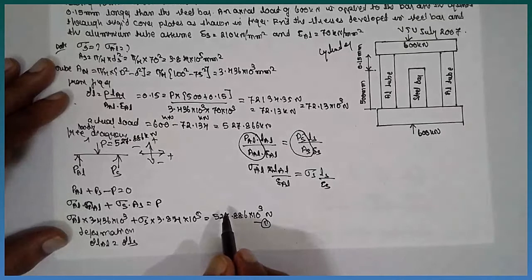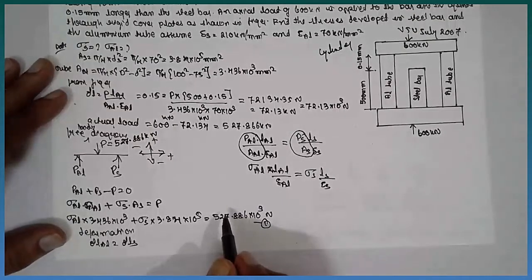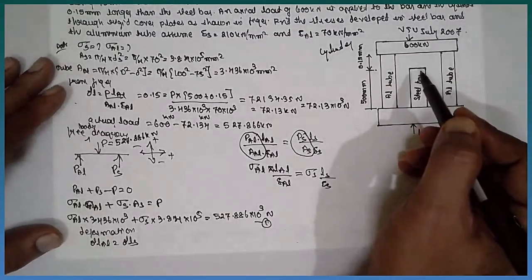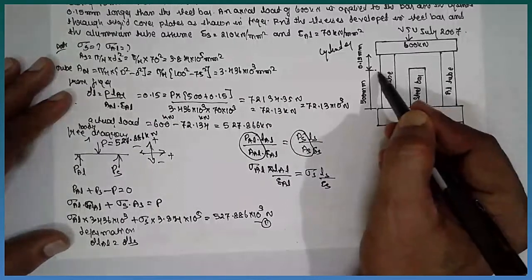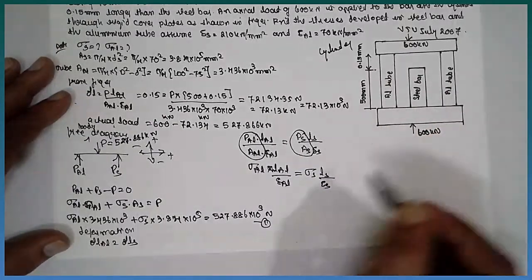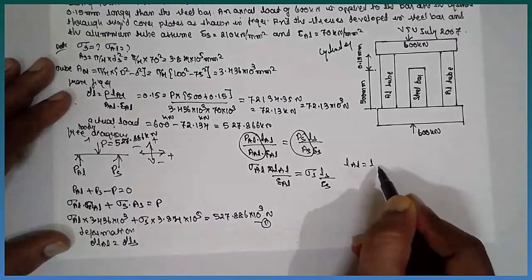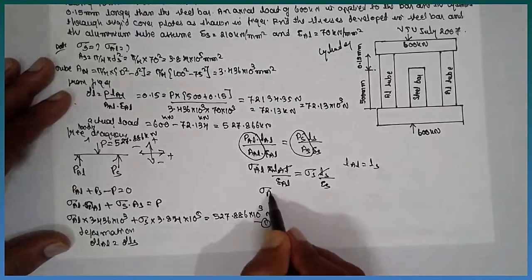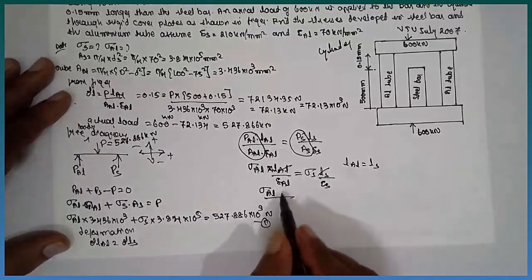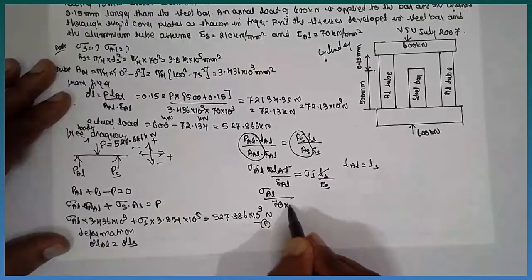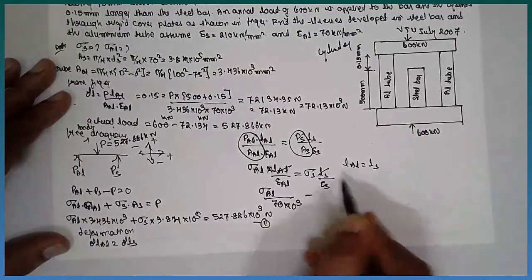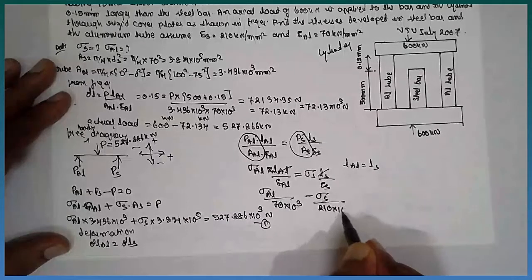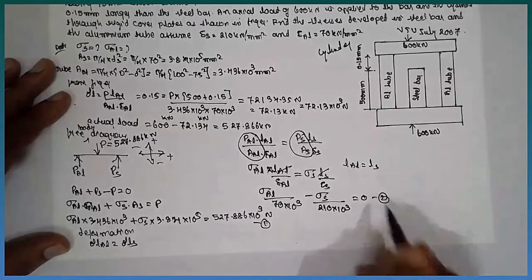Now from the figure, as it reaches here, the length will change. That means the length for the tube and the steel will be same, therefore the length of aluminum and the length of steel are equal and get cancelled. Sigma AL divided by Young's modulus for aluminum is 70 into 10 raise to 3 minus sigma S divided by steel, 210 into 10 raise to 3 equals 0, equation 2.